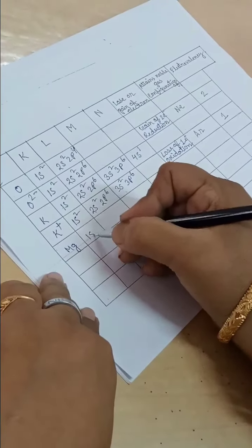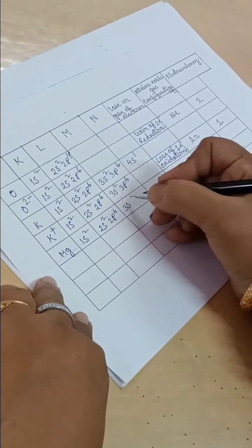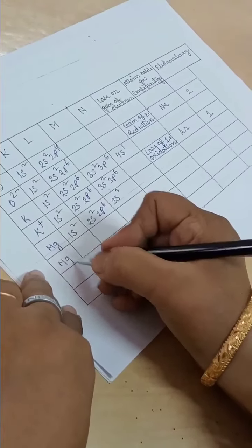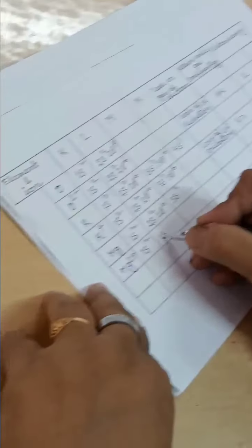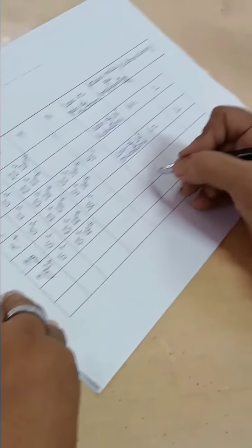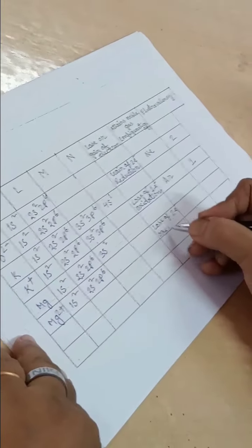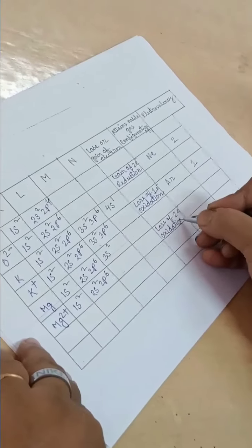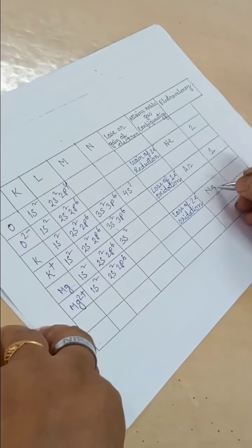Magnesium: 1s2, 2s2, 2p6, 3s2. Magnesium 2+: 1s2, 2s2, 2p6. Loss of 2 electrons, oxidation, attains neon configuration, electrovalency 2.